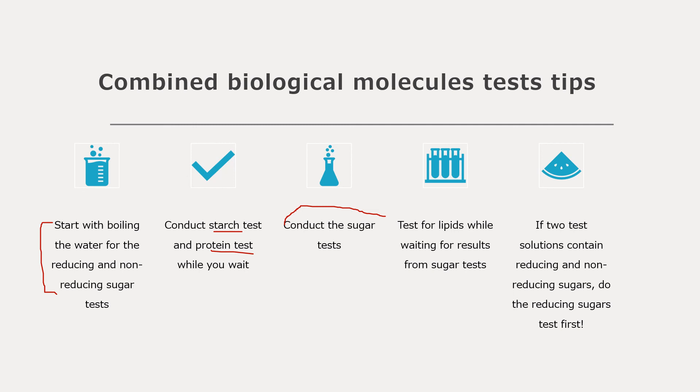Another key tip: if you are testing two solutions and you're not sure which one has reducing sugar and which one has non-reducing sugar, start with the reducing sugar test first. If you simply add Benedict's solution and heat it up, the reducing sugar is going to give you a colored result while the non-reducing sugar will be negative. Then you can do the non-reducing sugar test and see which one turns positive. So yeah, those are my tips and I hope that you find them helpful. I wish you good luck in your paper 3 and in the upcoming exams. Goodbye.